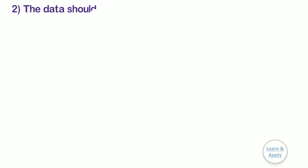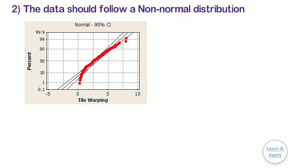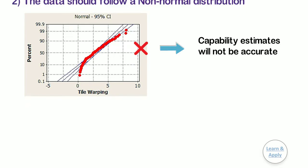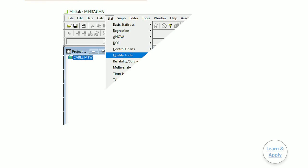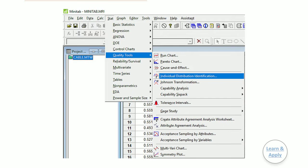Second, the data should follow a non-normal distribution. If the selected distribution does not closely fit the data, the capability estimates will not be accurate. To determine which non-normal distribution best fits your data, use individual distribution identification.